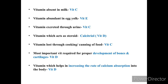The vitamin which acts as a steroid is calcitriol, another name for vitamin D. The most important vitamin required for proper development of bones and cartilages is vitamin D. Vitamin D also helps in increasing the rate of calcium absorption into the body.